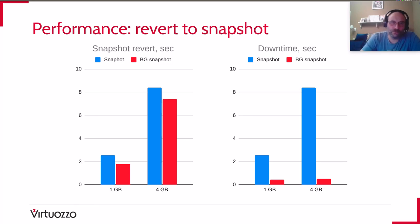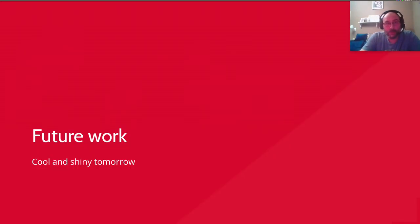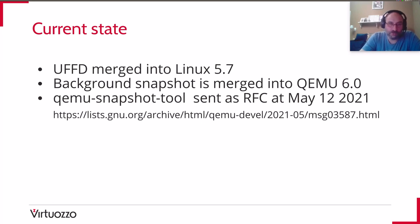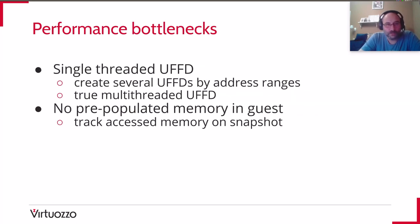What is the current state of the project? UserFaultFD with write-protect is merged into Linux kernel 5.7. The background snapshot feature is merged into QEMU 6.0, and the QEMU snapshot tool RFC has been sent in May of this year. We need to improve this further.